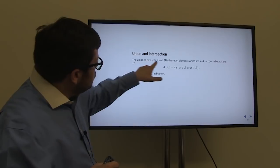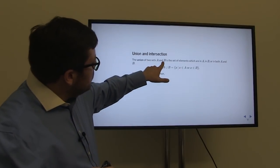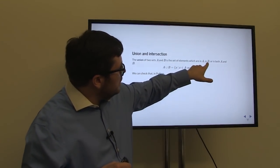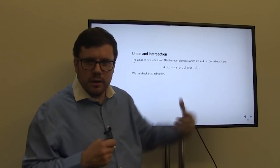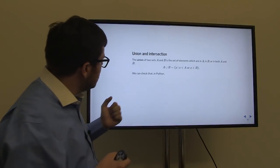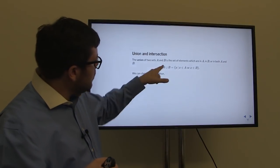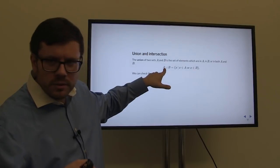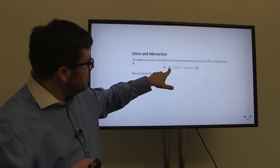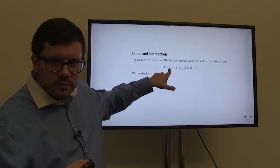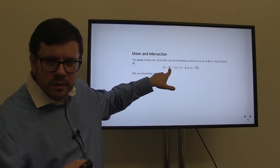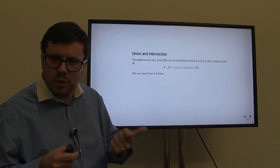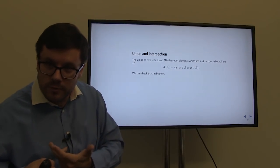The union of two sets A and B is the set of elements which are in A, in B, or in both A and B. For example, if A is the set {1, 2, 3} and B is {2, 4, 5}, then the union is the set {1, 2, 3, 4, 5}. In Python, if A is {3, 5, 7, 9} and B is {1, 2, 3}, the union gives {1, 2, 3, 5, 7, 9} — combining all elements of A and all elements of B.